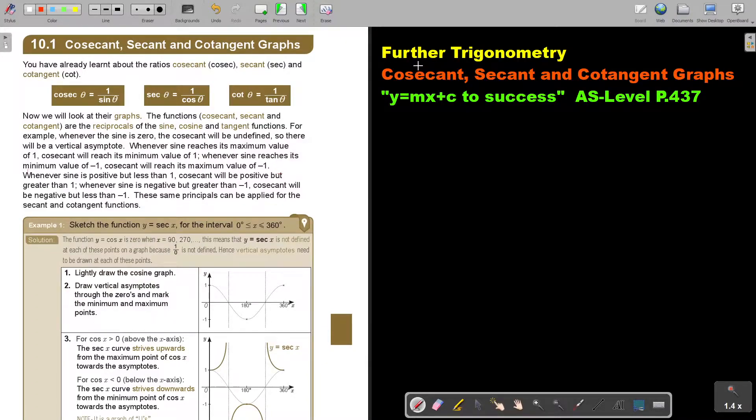In this video, we will start with further trigonometry, and we will focus on the cosecant, secant, and cotangent graphs. You will find this on page 437 in the Namibia AS level mathematics textbook Y equals MX plus C to success.